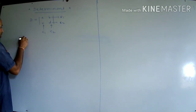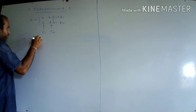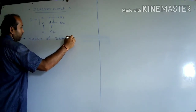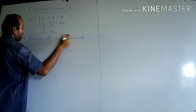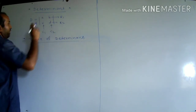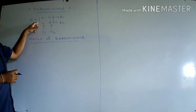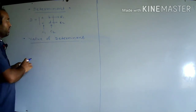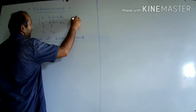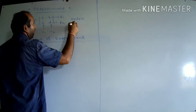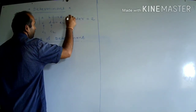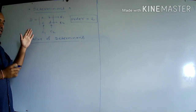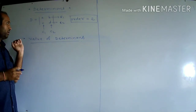Now see the value of a determinant. In this determinant there are two rows and two columns, so the order of this determinant is 2. In 10th standard, only determinants having order 2 are given.